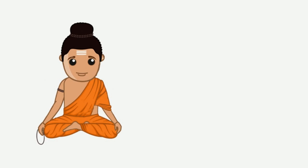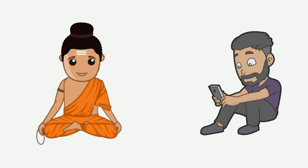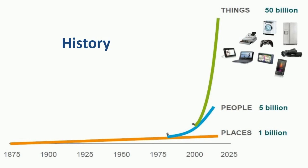Long ago, sages used to know what is happening in the world sitting at a place. Now even we are able to do so sitting at a place using our phones. We used to read books which say that due to limited resources, there would be a single phone used by everyone in a village to talk to their friends and families in other villages.